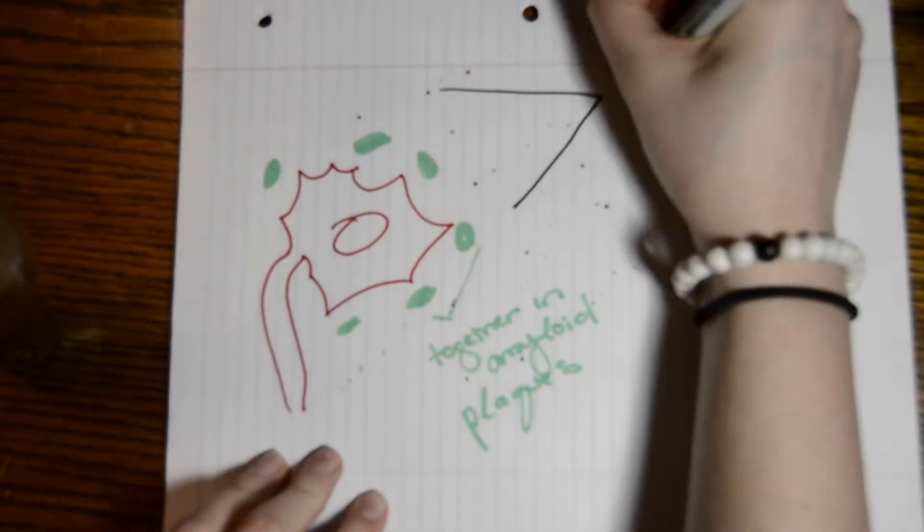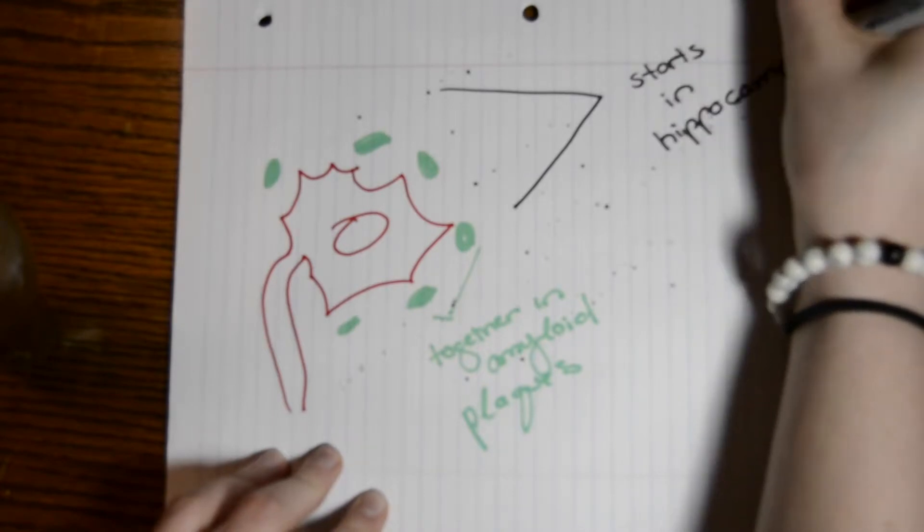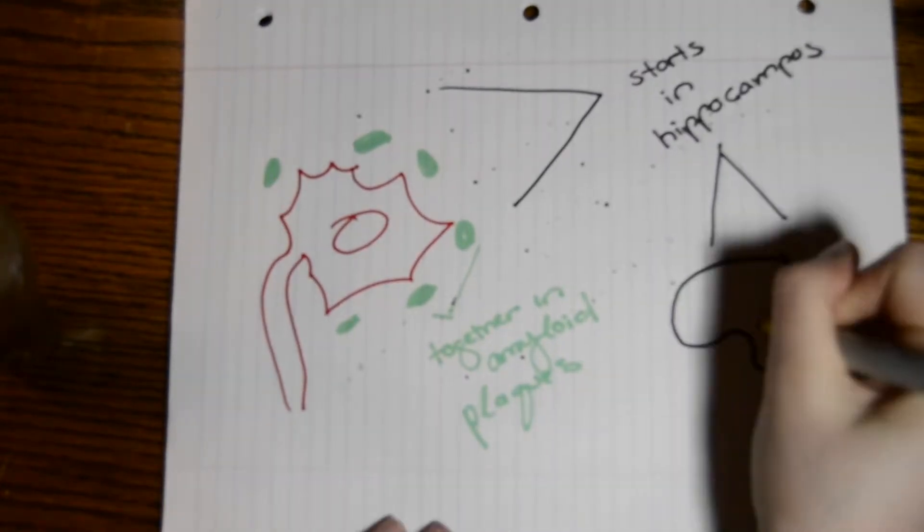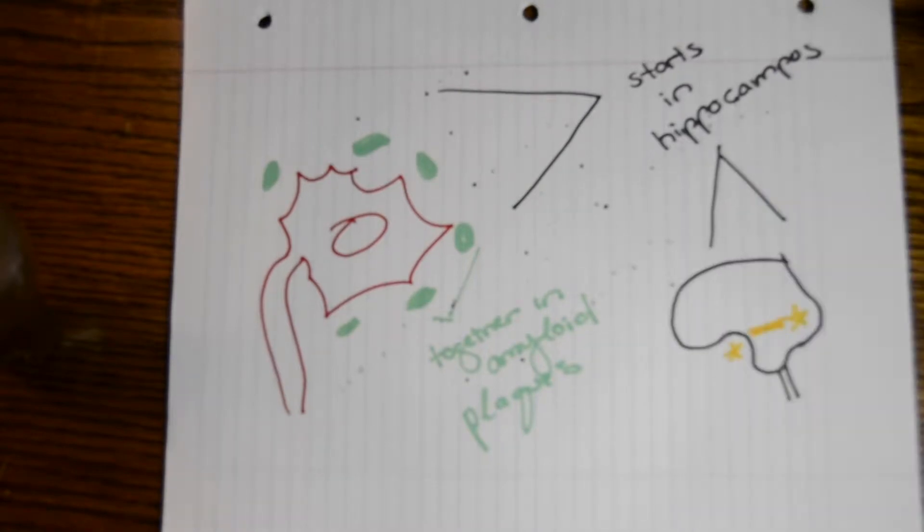This death first occurs within the hippocampus of the brain, causing memory loss in Alzheimer's patients. However, how exactly does this occur? Let's find out.